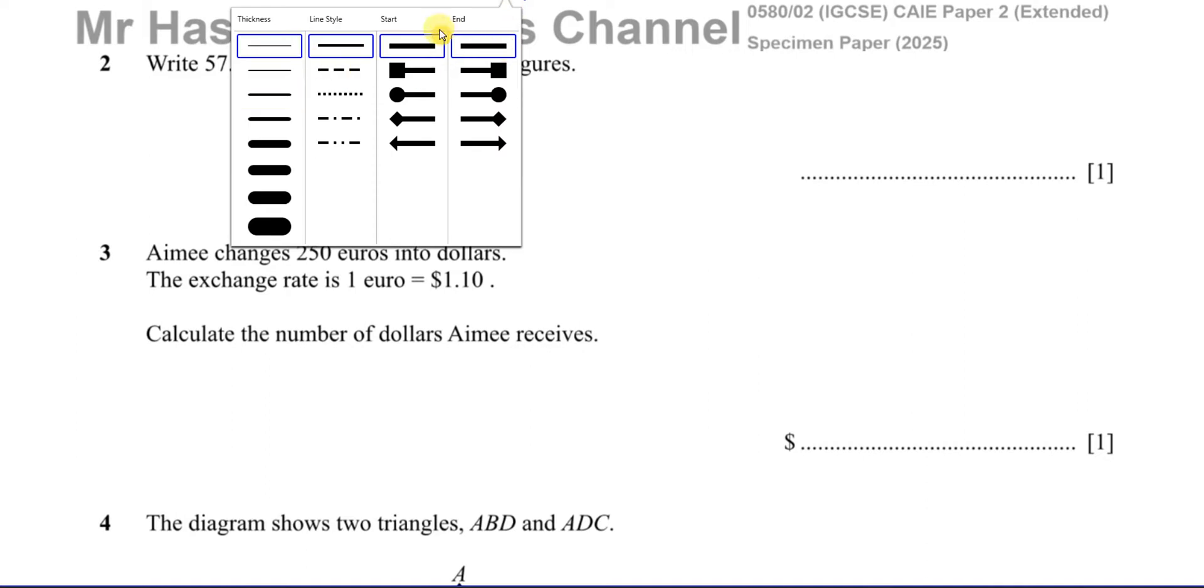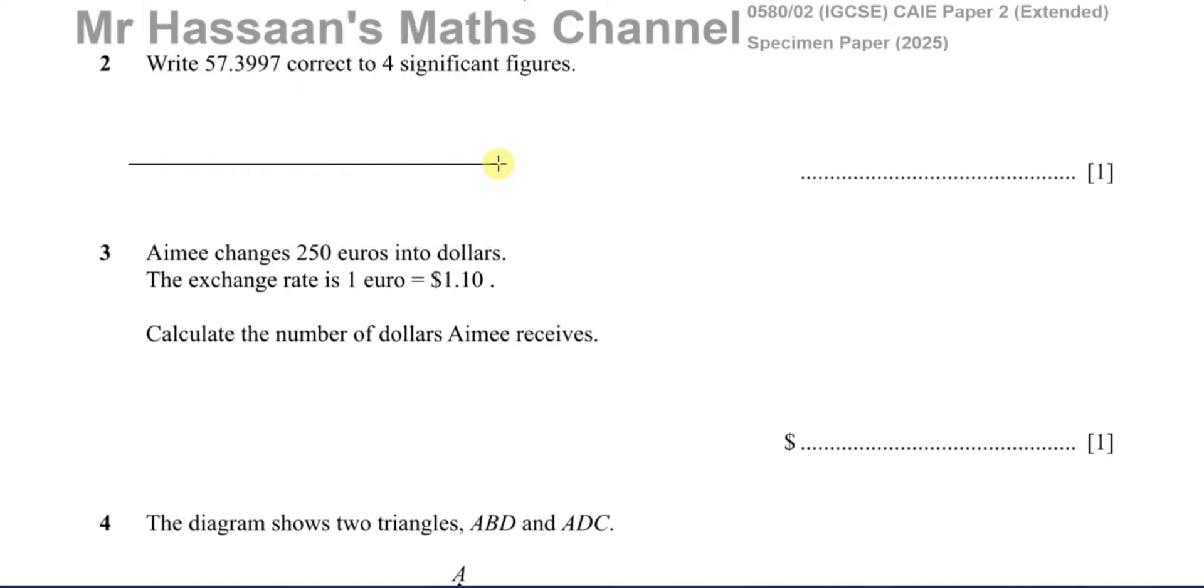So I'm going to go into a bit of detail to explain what significant figures are. We're going to write this number correct to four significant figures. So we are rounding this to a particular place value determined by the number of significant figures.